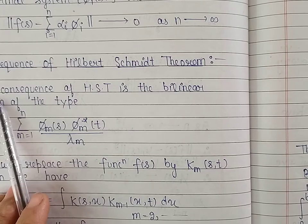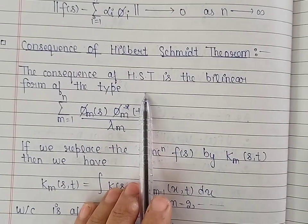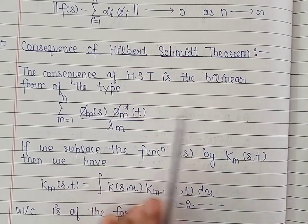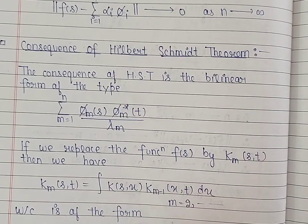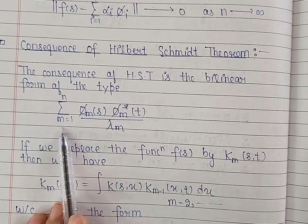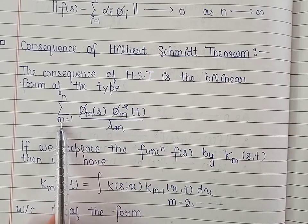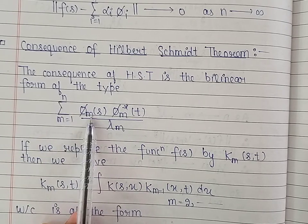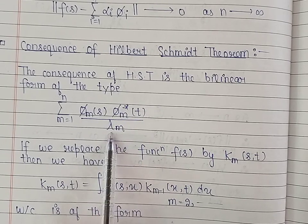The first consequence of the Hilbert-Schmidt theorem is the bilinear form for the m-th iterative kernel. We already obtained the bilinear form for the given symmetric kernel, which is given by the summation where m varies from 1 to n of phi_m(s) times phi_m conjugate(t) divided by lambda_m.